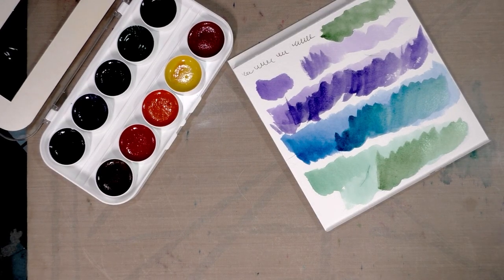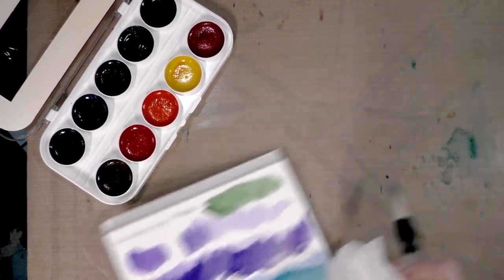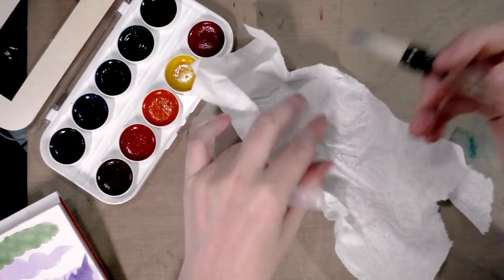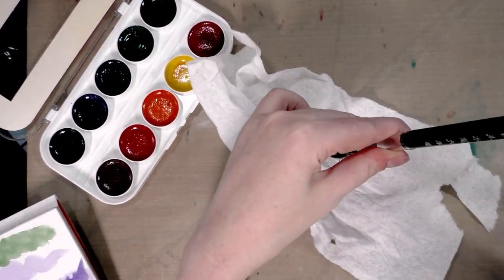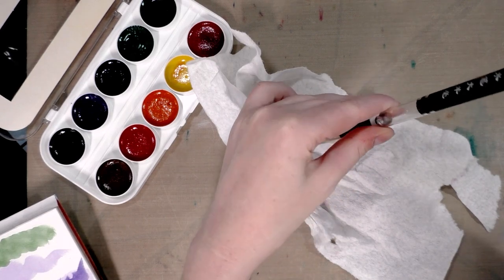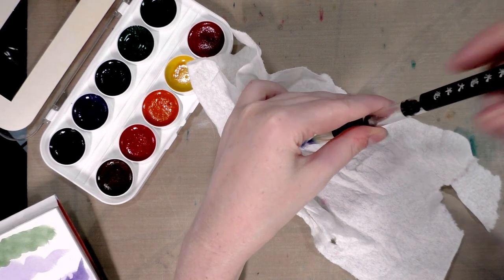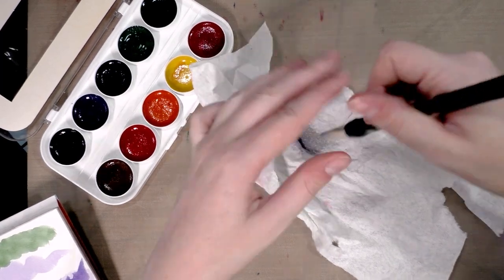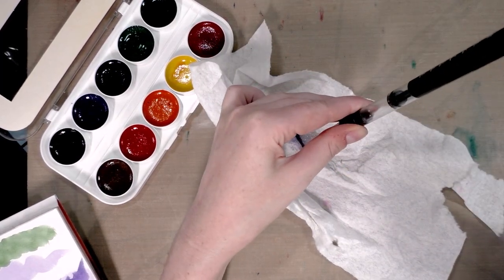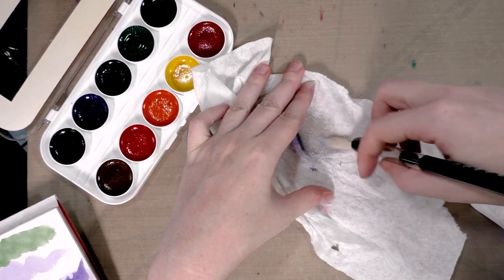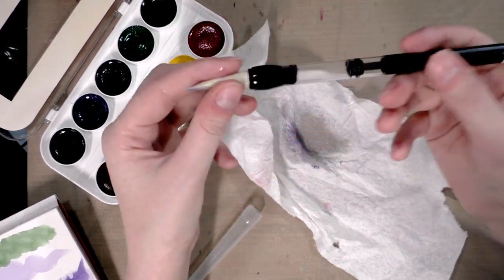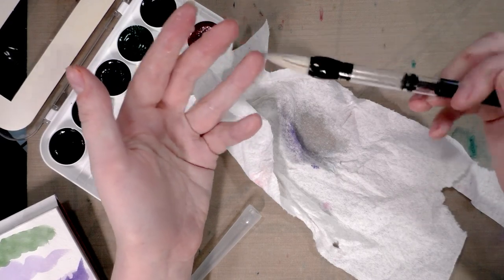I'm going to clean it off really quick on a piece of paper towel. Now, usually with water brushes, I will squeeze and scrub. What I'm going to do with this is I'm just going to expel some water and scrub. And the water goes really quick in this thing. So you're going to want to bring a backup source of water. However, that does a pretty decent job of getting most of the paint out.